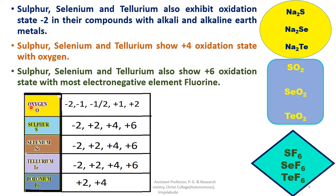The oxygen family members exhibit various oxidation states. Oxygen shows −2, −1, −½, +1, and +2. Sulfur shows −2, +2, +4, and +6. Selenium shows −2, +2, +4, and +6. Tellurium shows −2, +2, +4, and +6. Polonium shows +2 and +4 oxidation states.